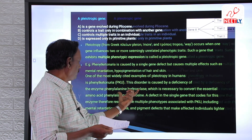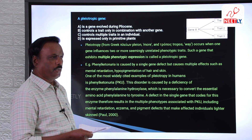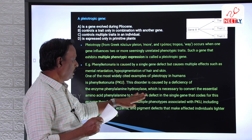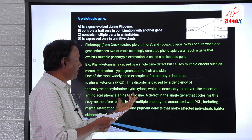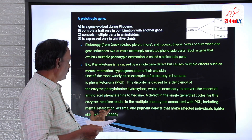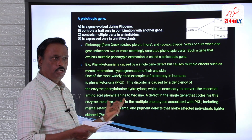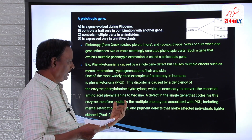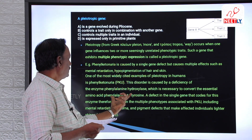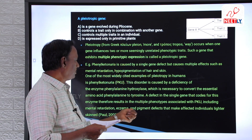When this enzyme is not secreted, the main effect is that phenylalanine is not converted into tyrosine. In addition to that, it produces many other effects: mental retardation, eczema, and pigment defects also occur due to phenylketonuria.